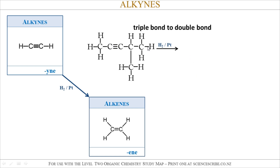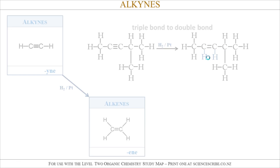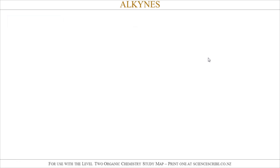It could be any example — here's another one with a triple bond. All I'm doing is changing the triple bond to a double bond, creating two new single bonds, putting the H's on, and that's how alkynes react at this level.